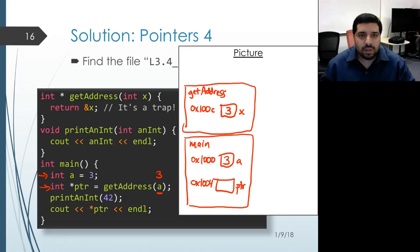Then we run the code within the body of our function. And so what that is going to do is it's going to return the address of X. Well, that address is 1000C. So that's the value that gets returned.